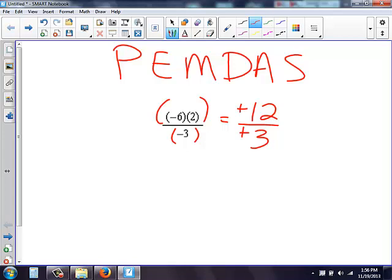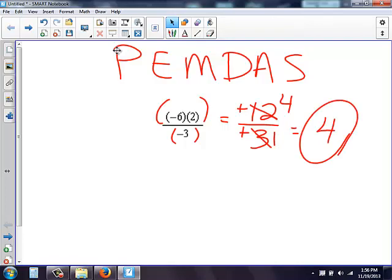So now I have 12 over 3. 3 goes into 12 four times, 3 goes into 3 one time. So when I simplify, my answer is 4.